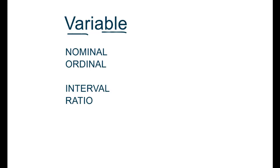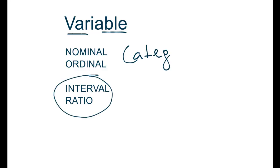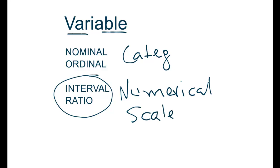Researchers distinguish between four levels of measurement and these levels are nominal, ordinal, interval, and ratio. Sometimes nominal and ordinal are also called categorical variables, and interval and ratio are also called numerical or scale variables.